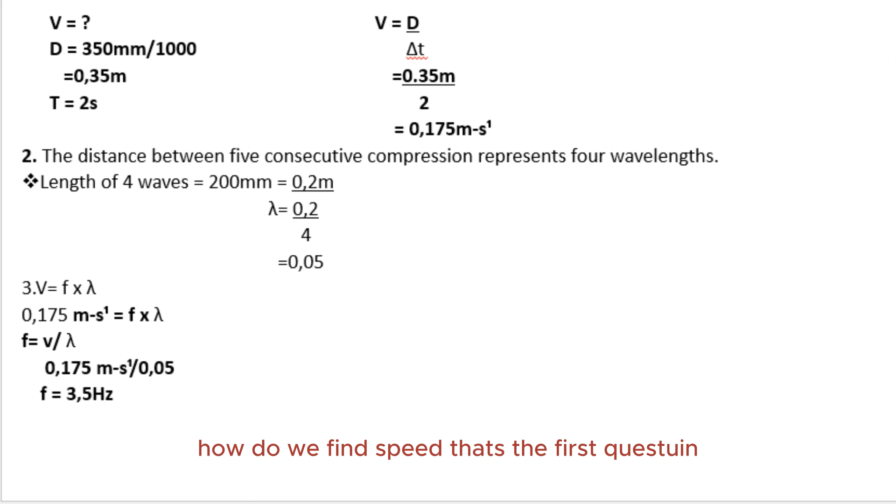V equals distance over time. We don't know V - that is the speed we are looking for. The distance we've been given is 350mm, which is 0.35m, in 2 seconds. Using the formula v = d/t, which is 0.35 over 2, our answer becomes 0.175 meters per second.